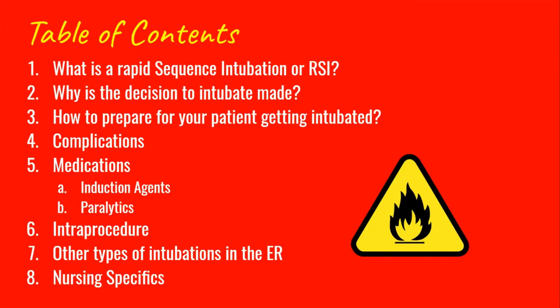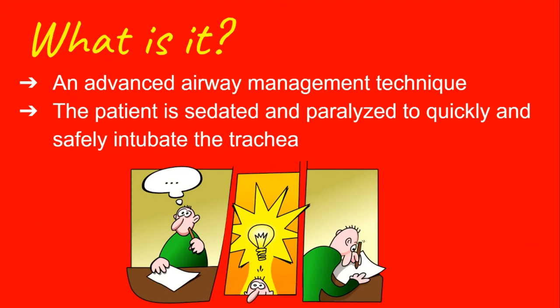In this slide I just wanted to give a brief outline of what our discussion will be today. What is rapid sequence intubation? It's an advanced airway management technique where the patient is sedated and then paralyzed in order to quickly and safely intubate the trachea. In other words, you're knocking someone out to the point where they can't move and placing a tube inside their trachea so that we can breathe for them using a ventilator.